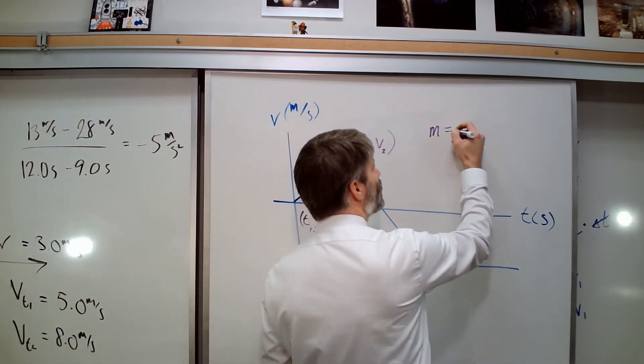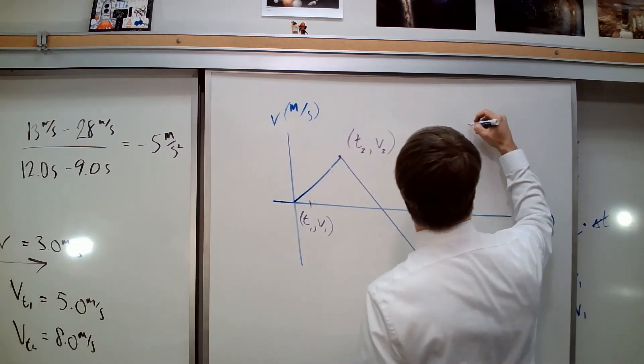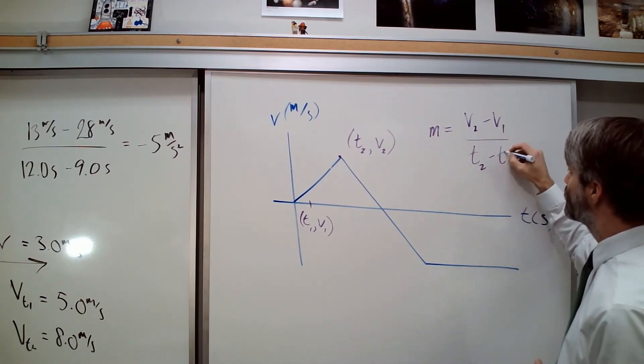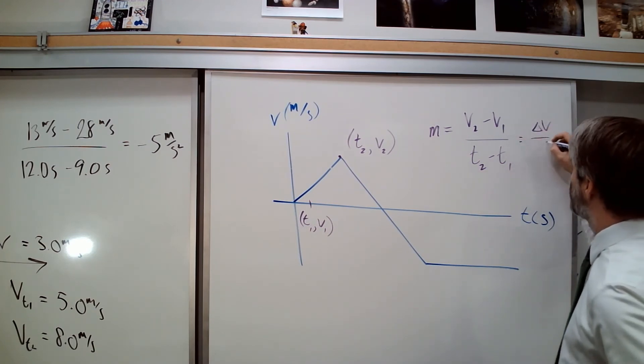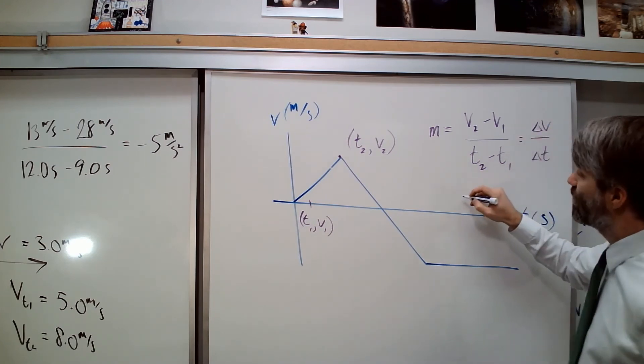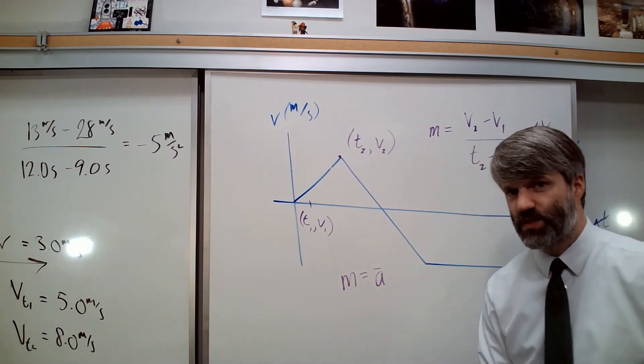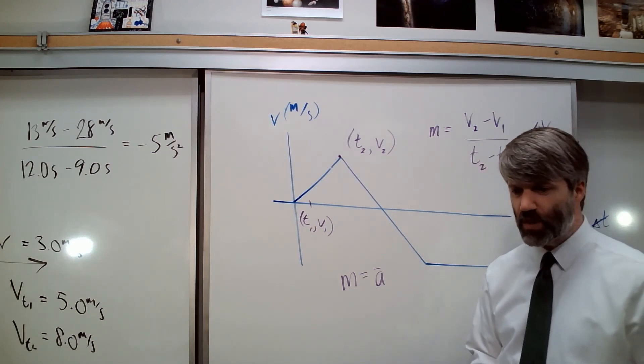That's the slope: y2 minus y1 over x2 minus x1. In this case, it's v2 minus v1 over t2 minus t1, which is change in velocity over time, which means that the slope gives us the average acceleration of the object.